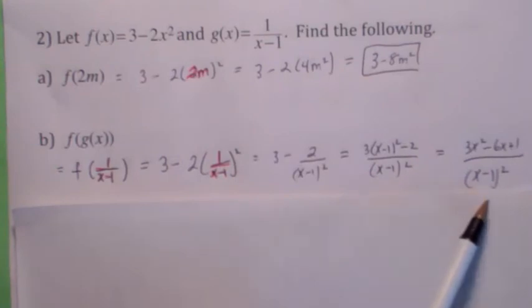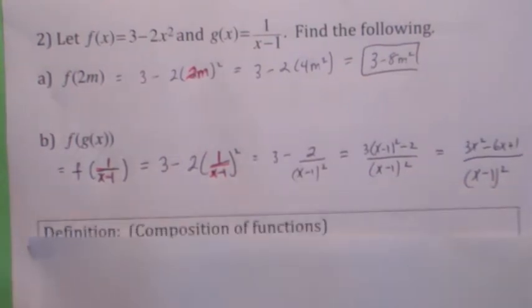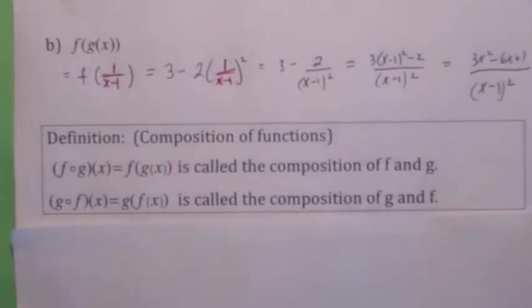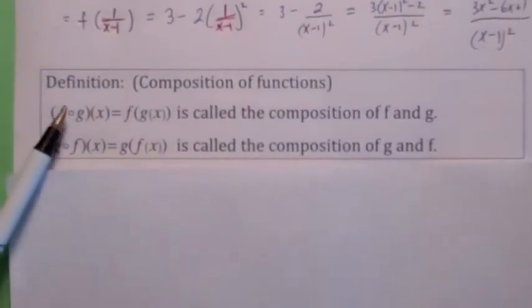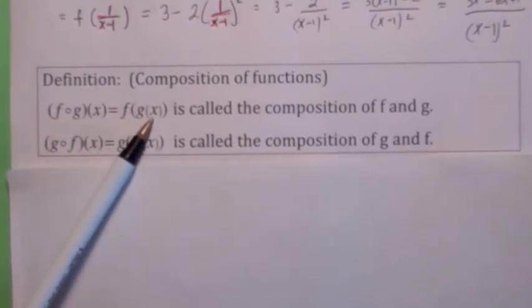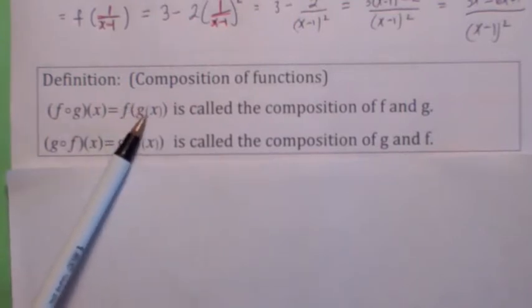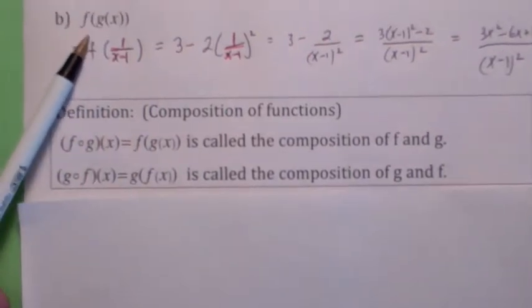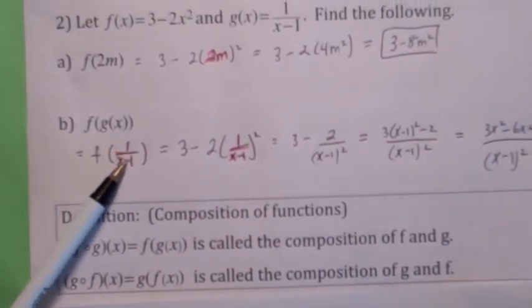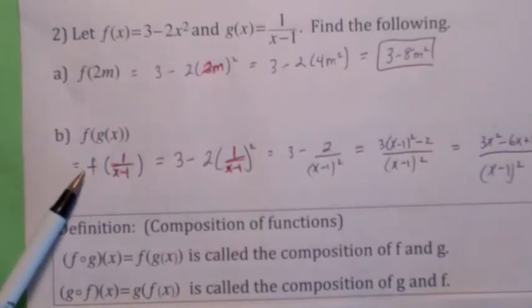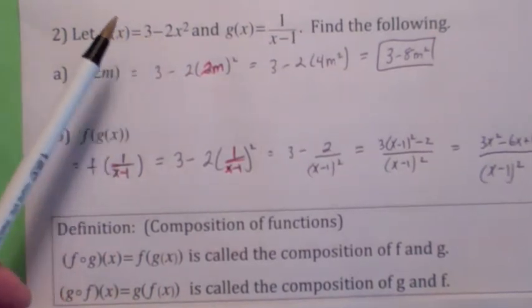I'm going really quickly here — you may have to hit the pause button. What I just gave you is an example of what's called the composition of two functions. If you write the notation f circle g of x, that means f of g of x. The order is really important. When you have f of g of x, you're first computing g of x and then plugging g of x into f. That's what we just did — we first computed g of x, which was 1 over x minus 1, then plugged that whole expression into the expression for f of x in for x.